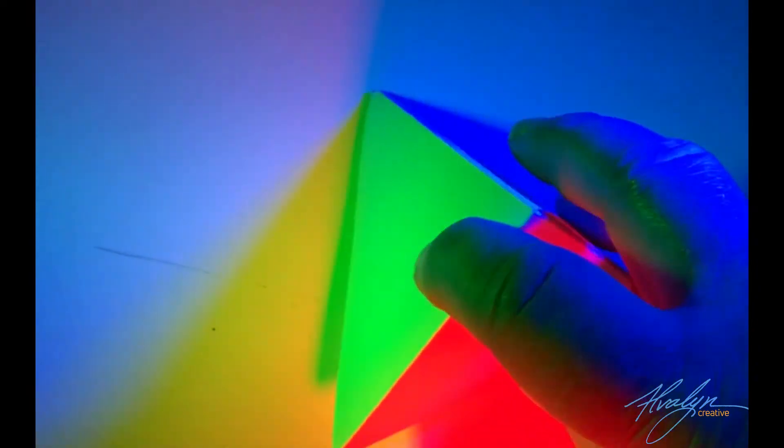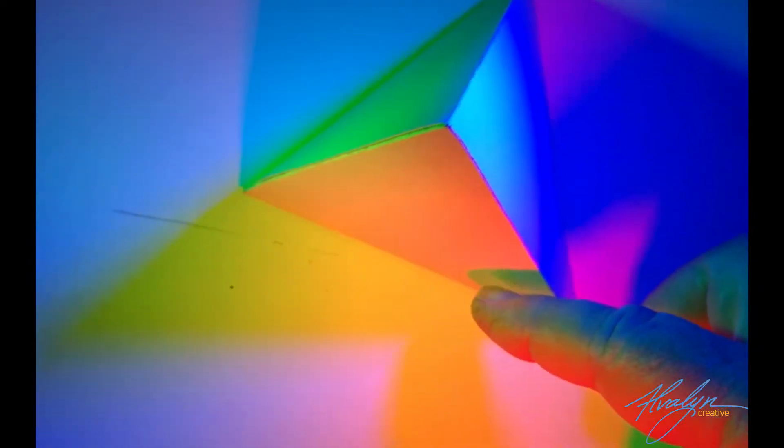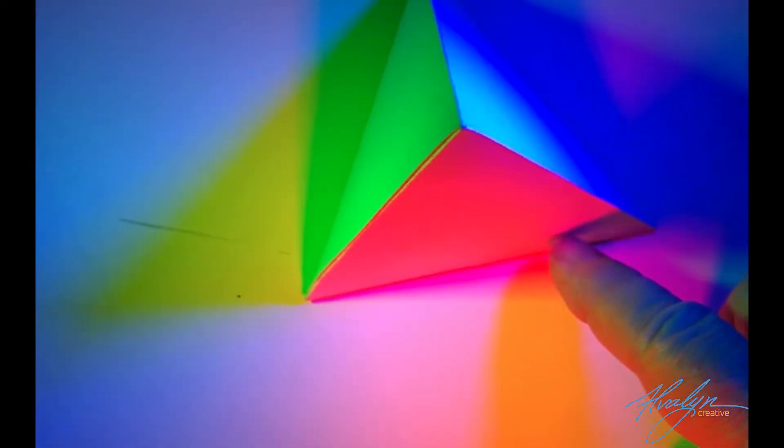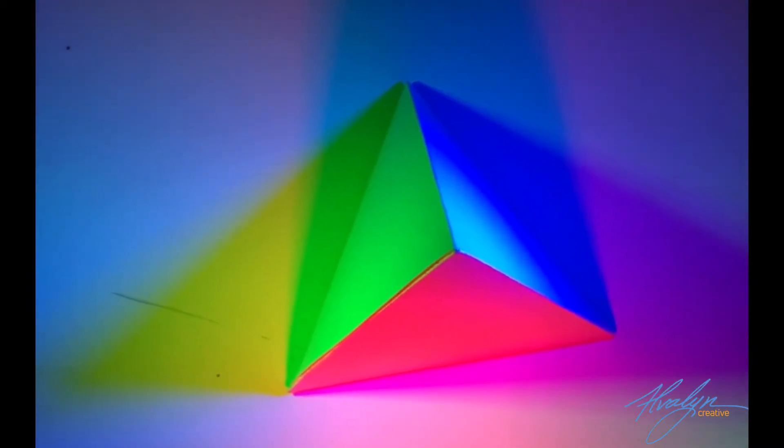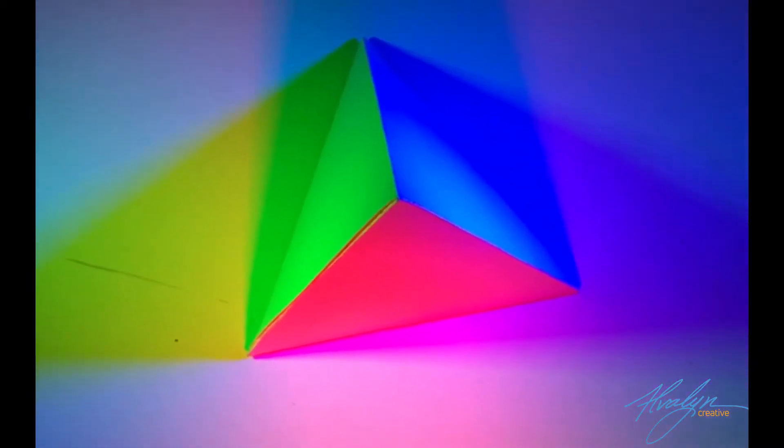It's a four-sided pyramid, and the color of the tetrahedron is actually white. But each side is now capturing each of the three lights.